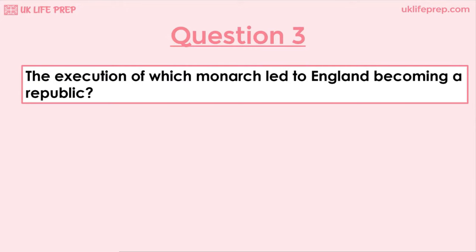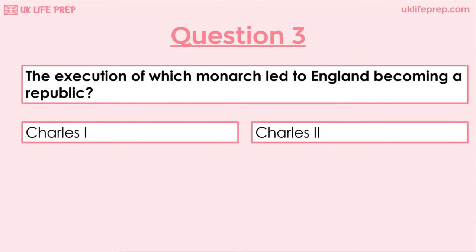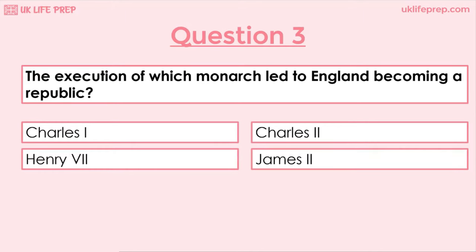Question 3: The execution of which monarch led to England becoming a republic? Charles I, Charles II, Henry VII or James II? The correct answer is Charles I.